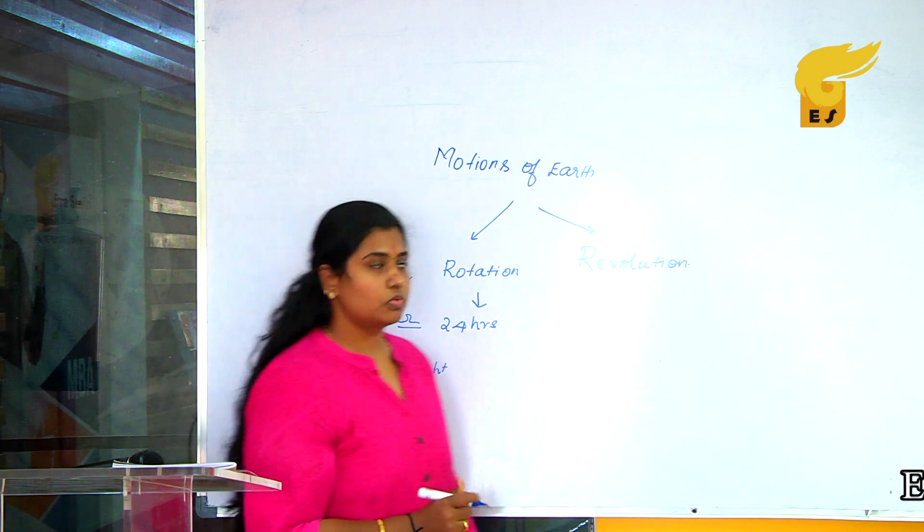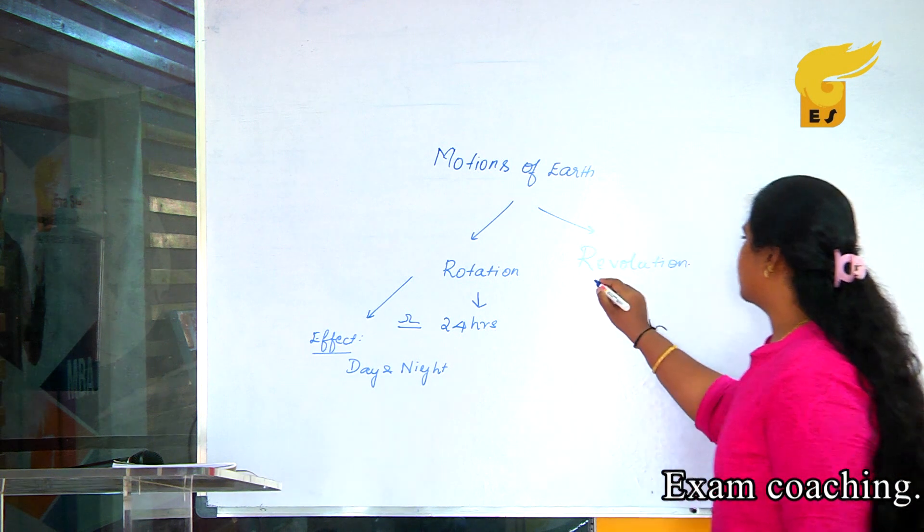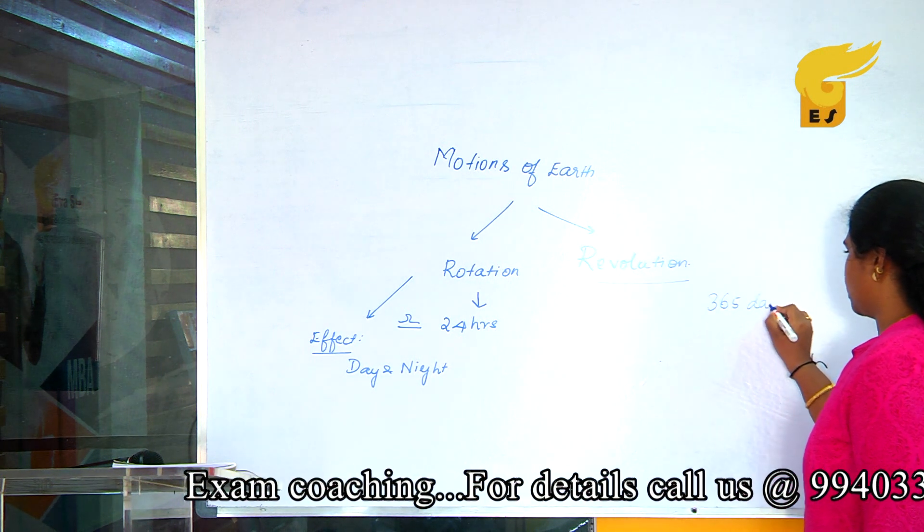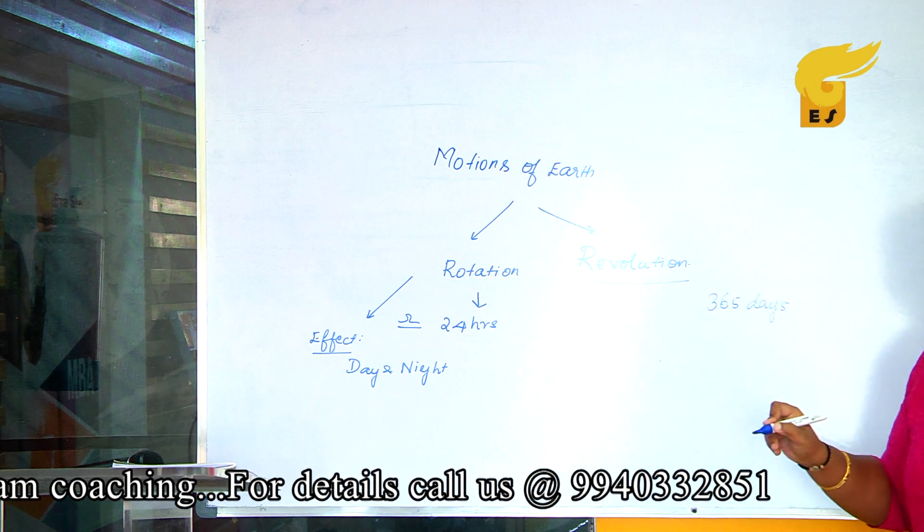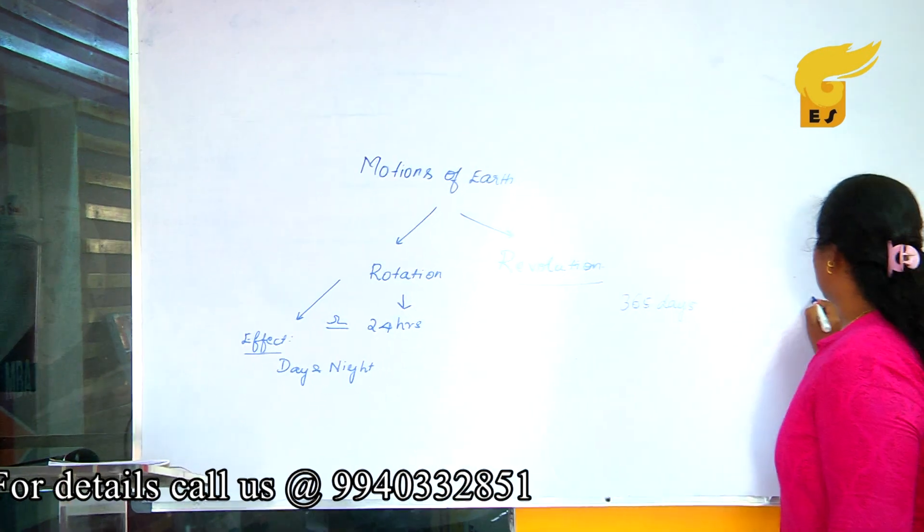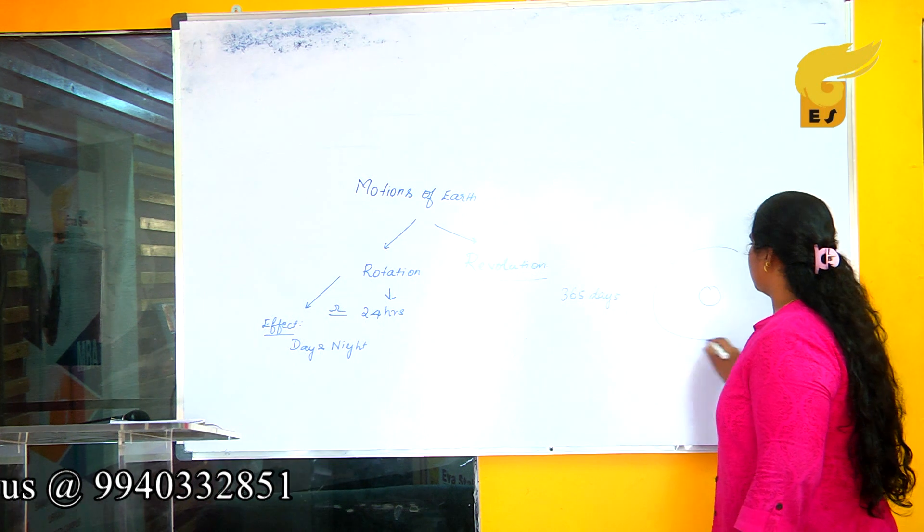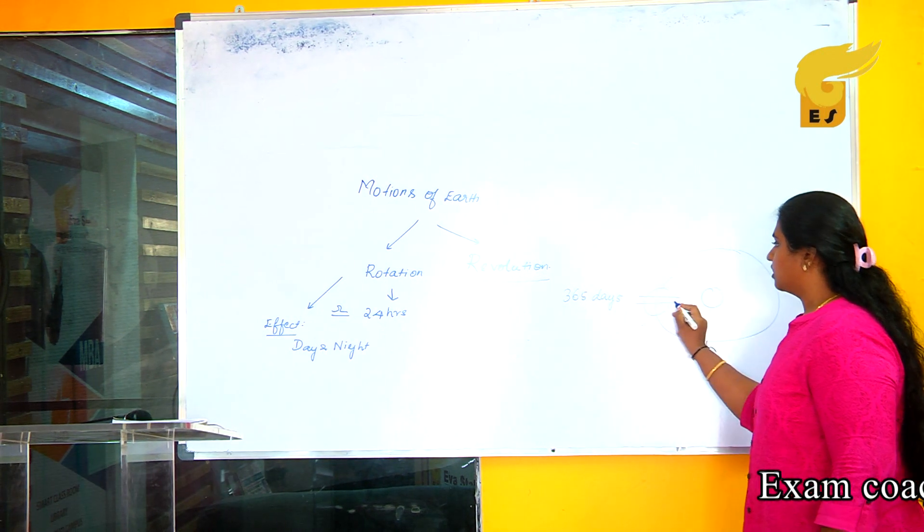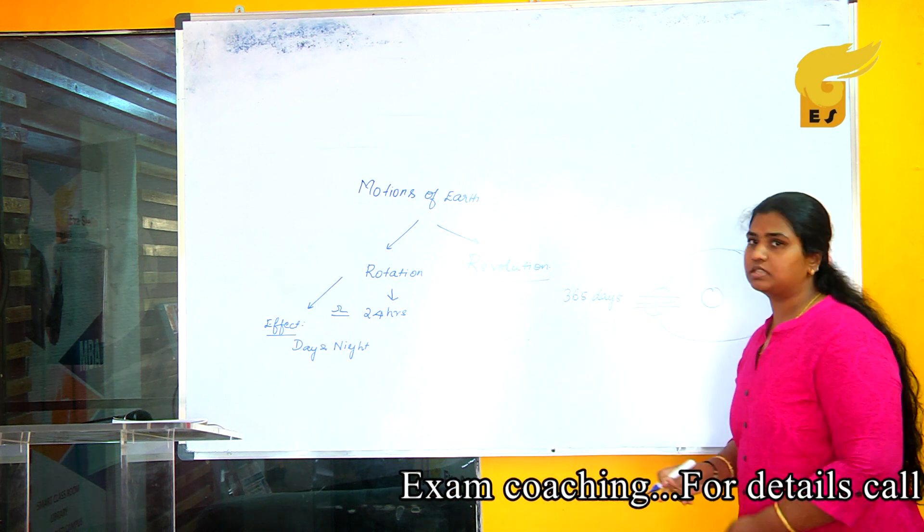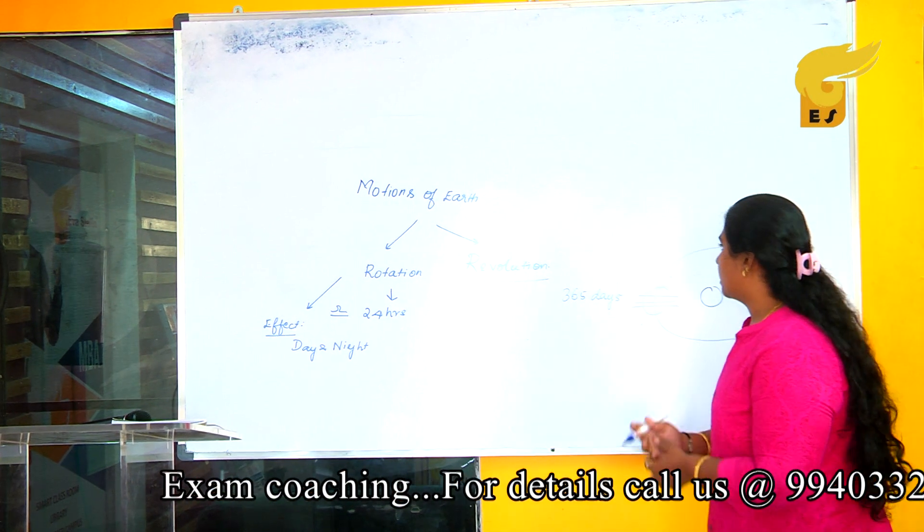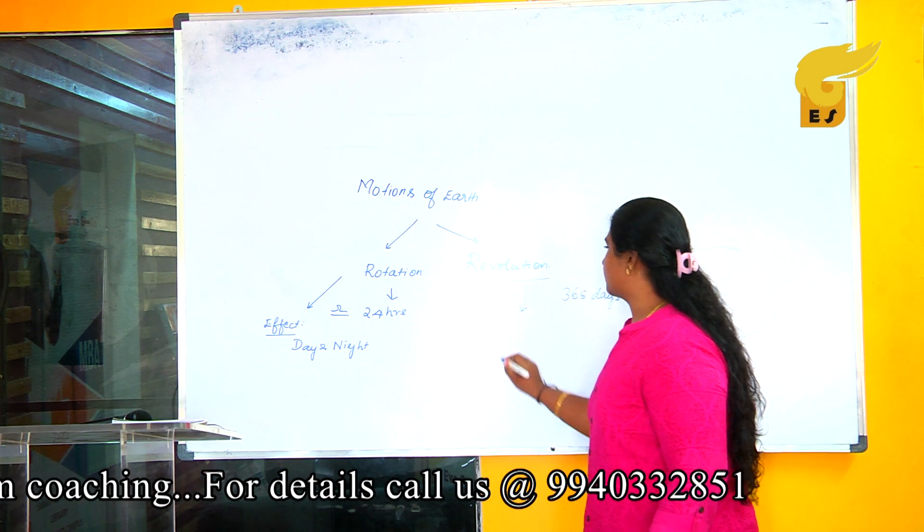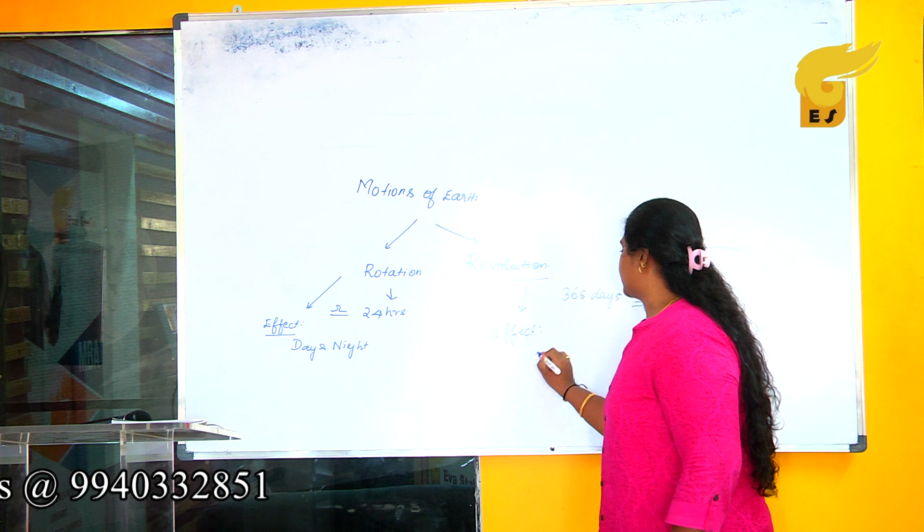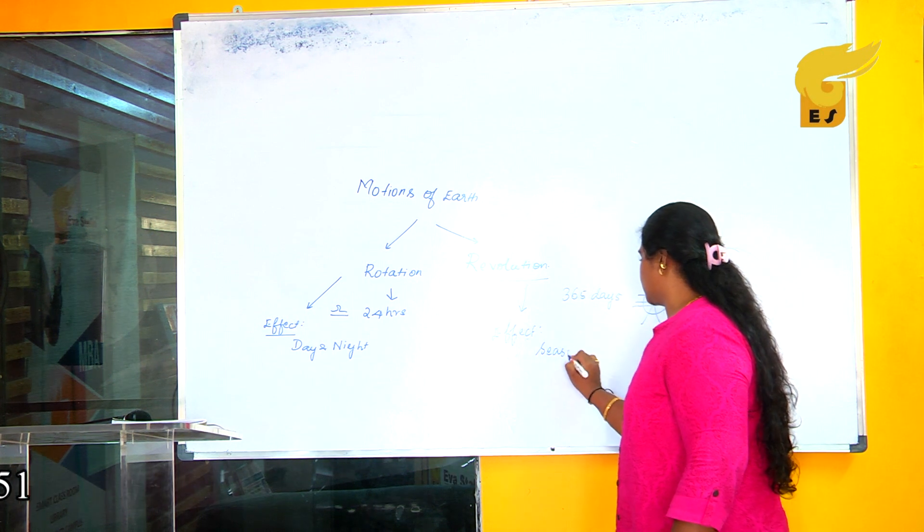When it comes to revolution, Earth takes nearly 365 days to complete one revolution. Revolution means Earth revolving around the Sun along a tilted axis, and it takes 365 days. The effect of revolution is seasonal changes.